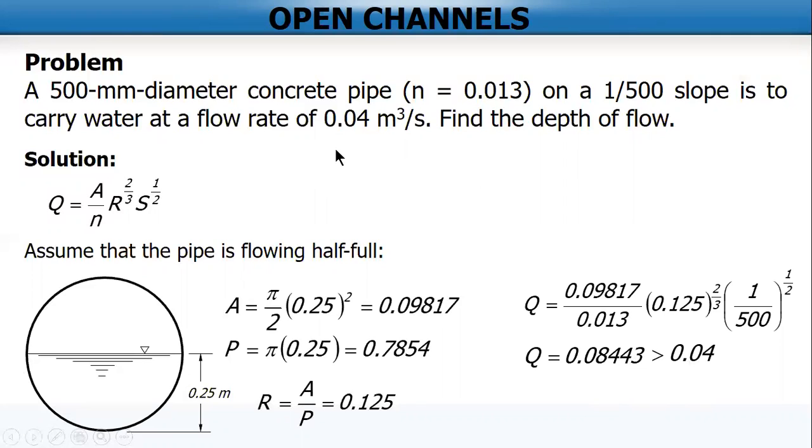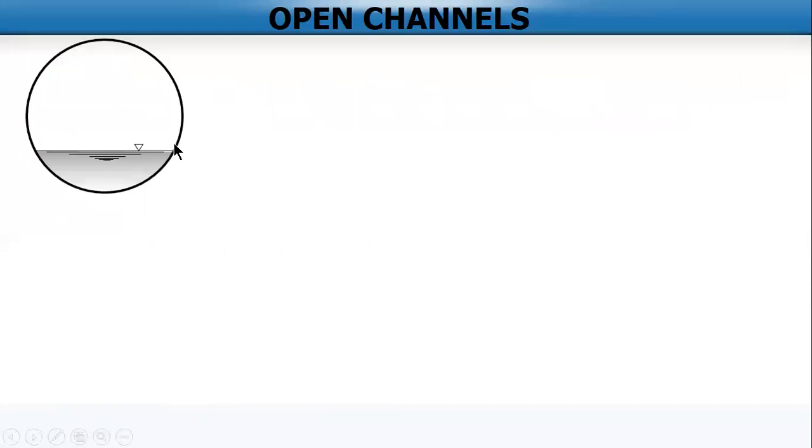Therefore, the depth of flow is lower than the center. Since we got 0.08, but the given is 0.04, so 0.04 is below the center. So now we solve for depth of flow like this one, below the center.